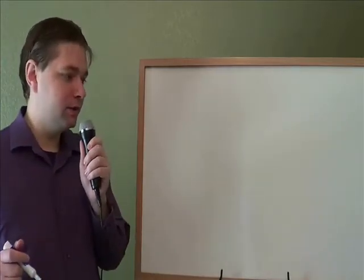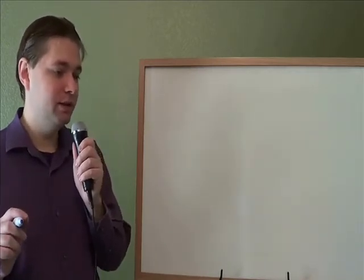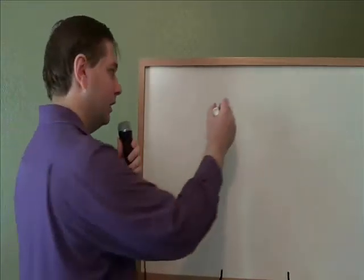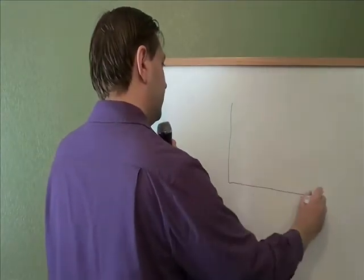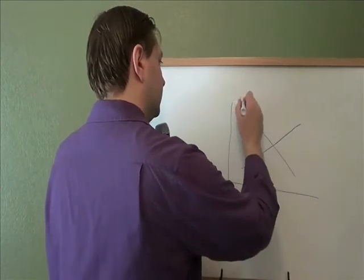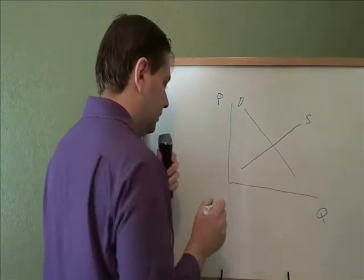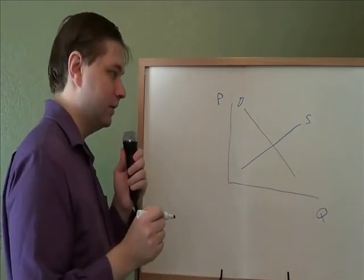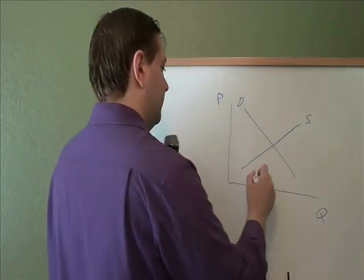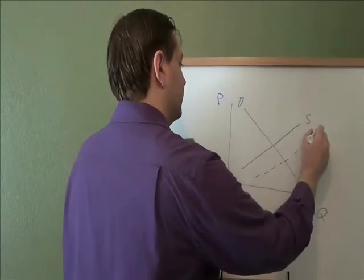What happens to the equilibrium price and quantity of Starbucks coffee when, first of all, new technology makes it easier to make coffee and people decide they prefer tea to coffee? So that's two things going on there. First of all, new technology means it's easier for Starbucks to make coffee. Well, if it's easier to make something, that's going to increase your supply. If it's easier and cheaper to make something, you want to make more of it and that's an increase in supply.